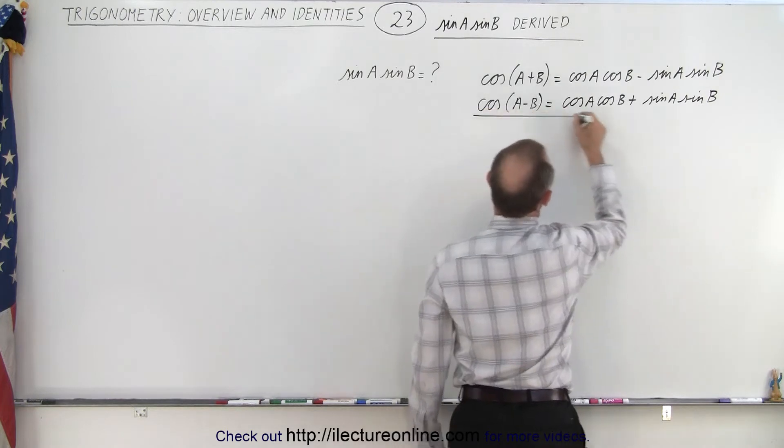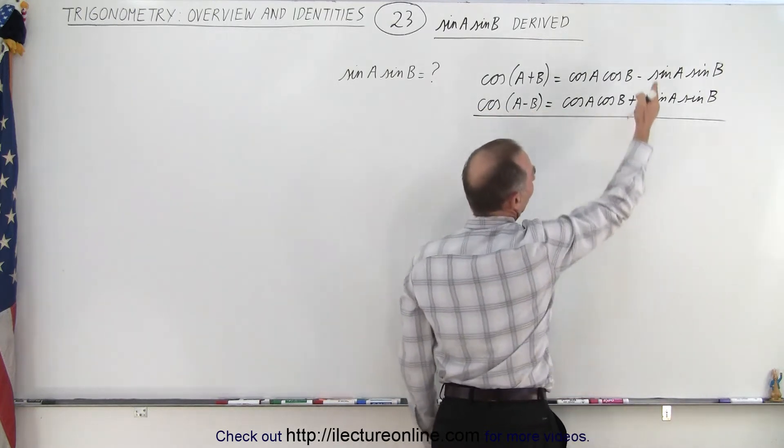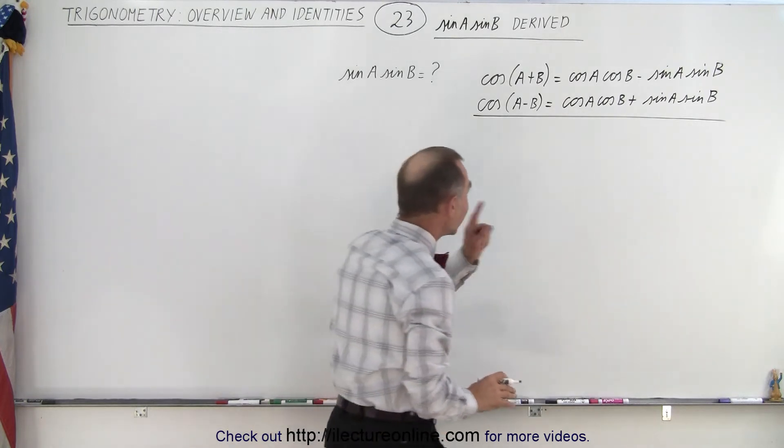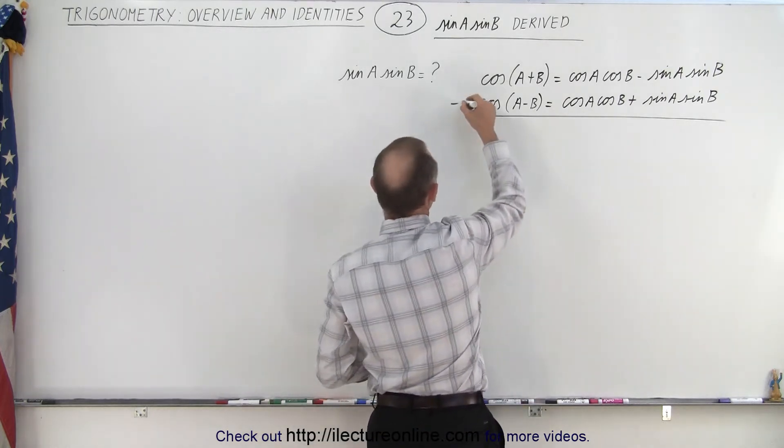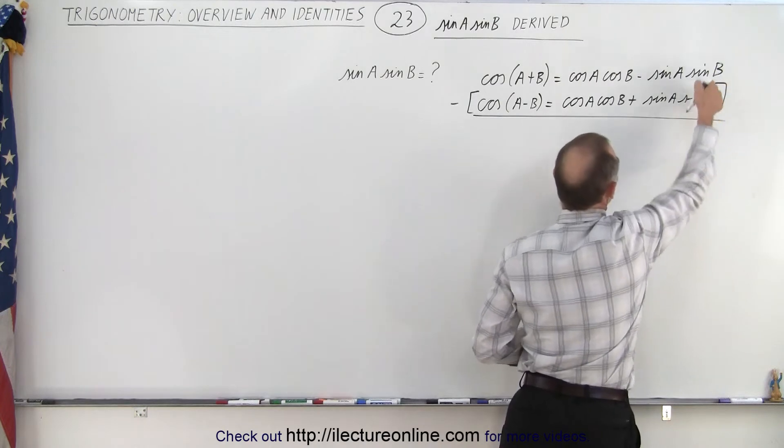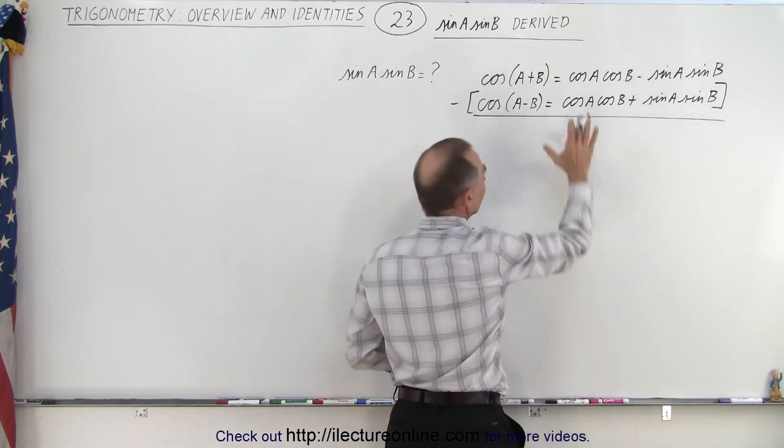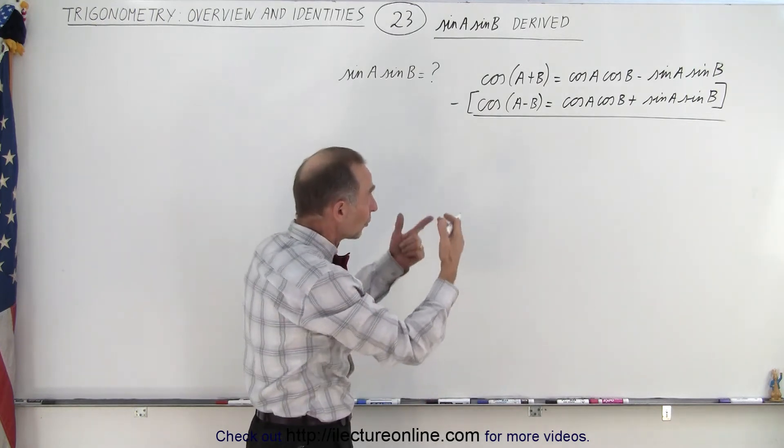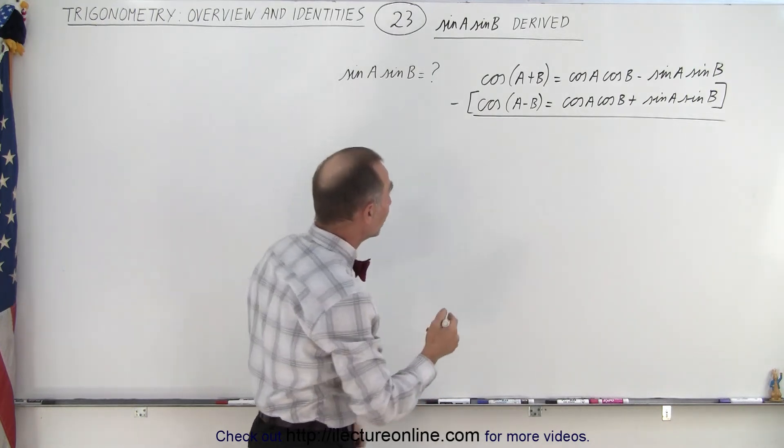Now when we add those two together, the sine a sine b term disappears, and that's what we don't want. We want to maintain that. So if we subtract those two equations, we will keep the sine a sine b and those cosine a cosine b terms will disappear. So let's do that.